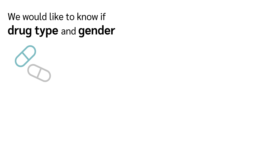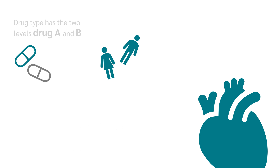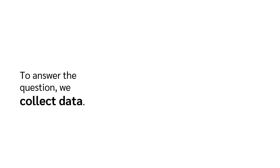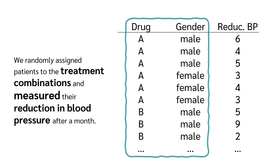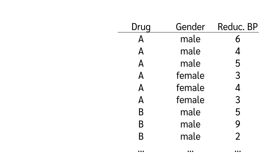We would like to know if drug type and gender have an influence on the reduction in blood pressure. Drug type has the two levels drug A and B, and gender has the two levels male and female. To answer the question we collect data. We randomly assigned patients to the treatment combinations and measured the reduction in blood pressure after a month.